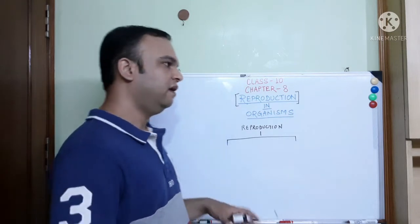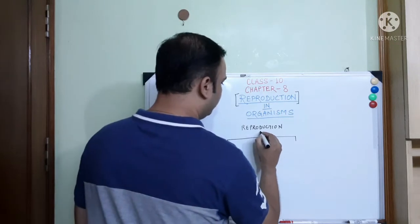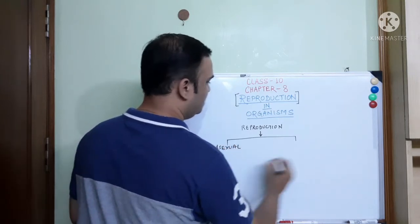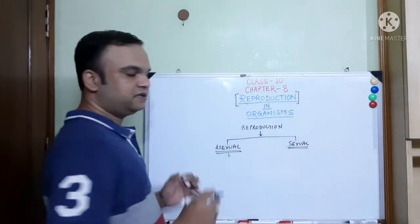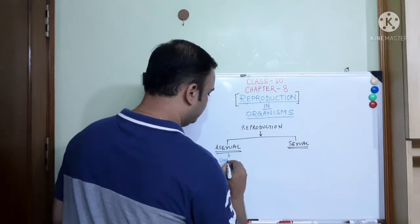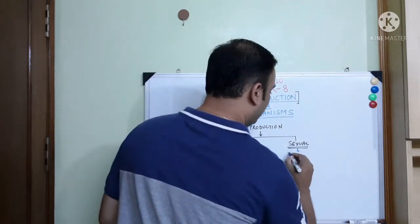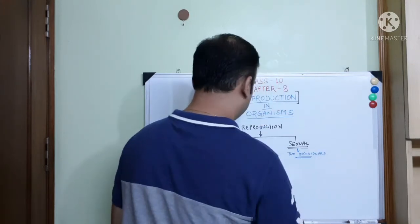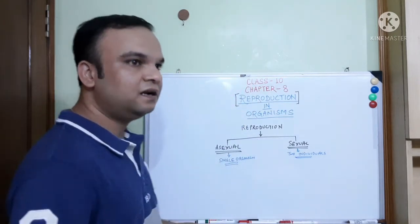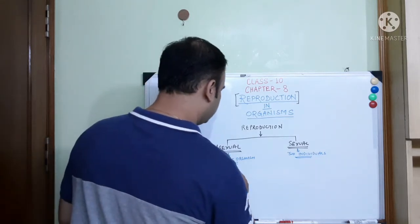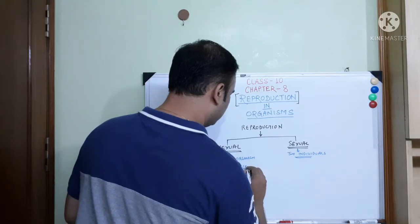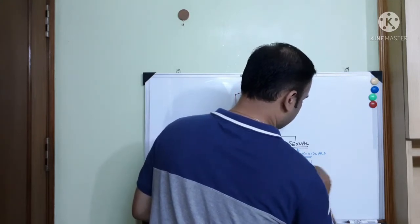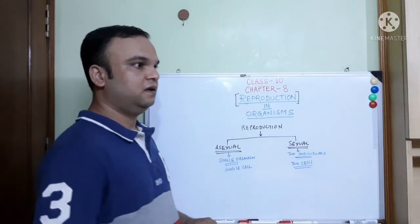Now we are going to study about the types of reproduction. Reproduction in the living world is categorized into two major types: one is the asexual mode of reproduction, and another is the sexual mode of reproduction. Asexual reproduction can be carried out by a single organism. For sexual reproduction, two individuals are required. Carrying forward that concept of cell division, a single cell can perform asexual reproduction, whereas two cells having different identities perform the sexual mode of reproduction.